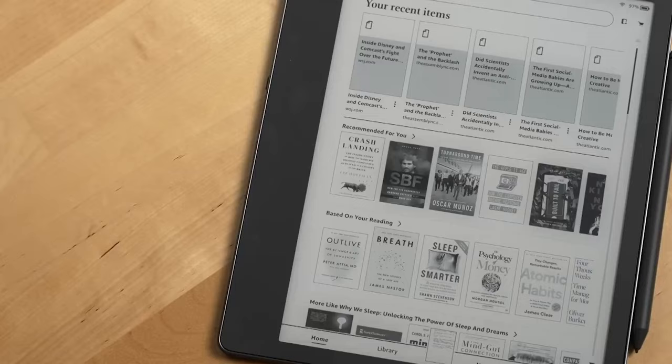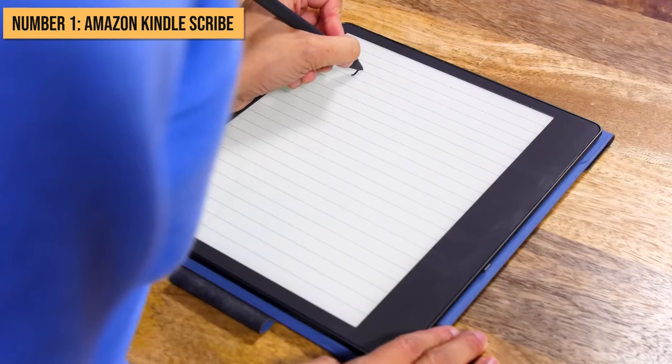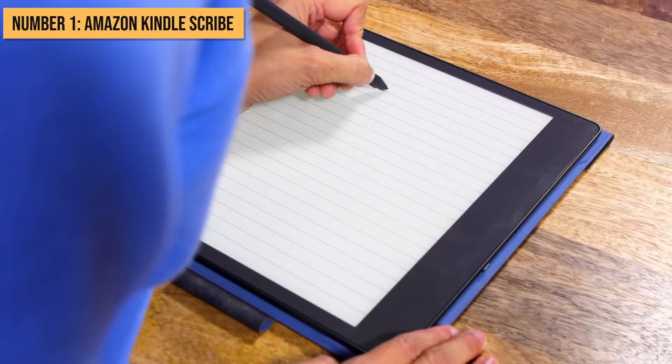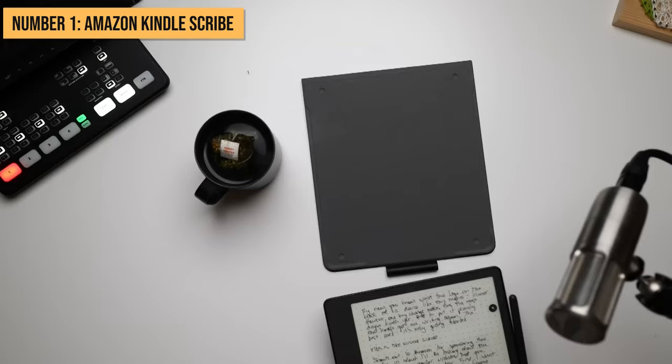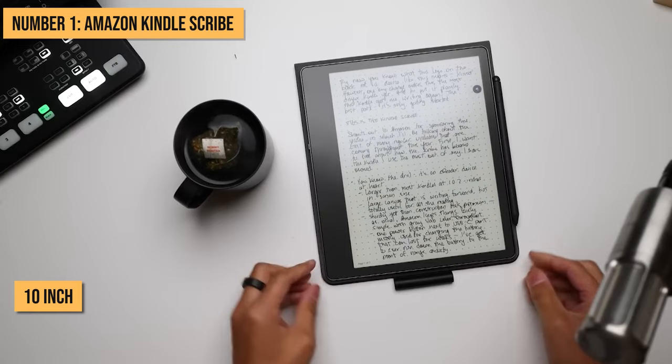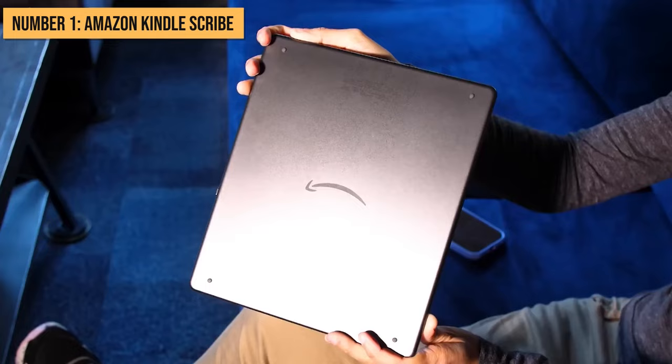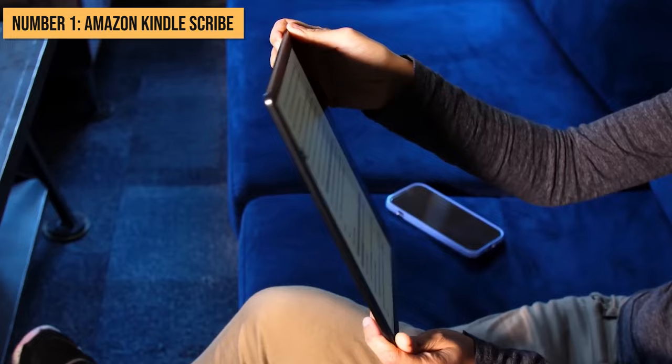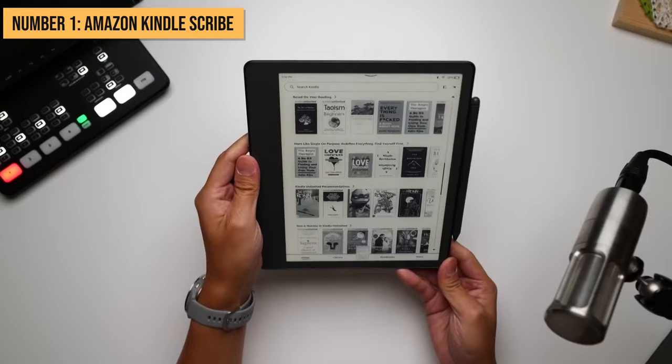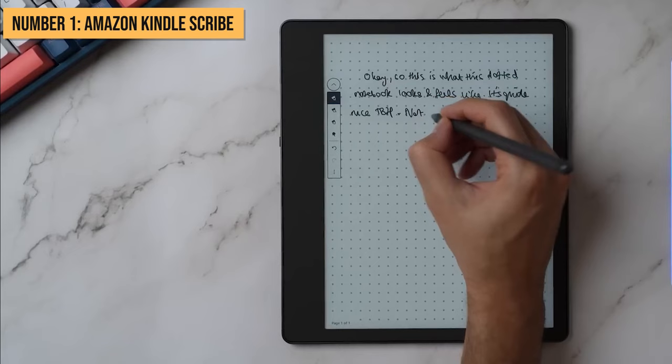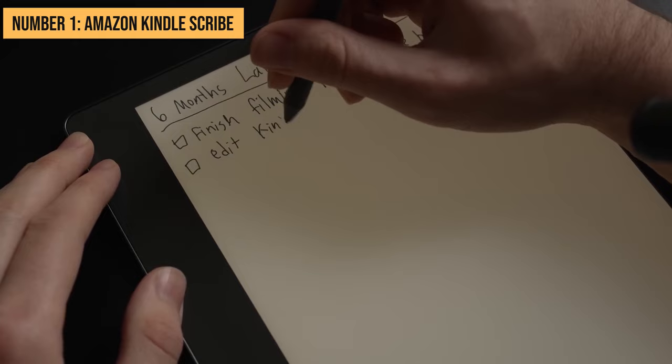Claiming our top spot for the best smart notebook in 2024 is the Amazon Kindle Scribe. This thing hits the sweet spot, combining the versatility of a paper notebook for freehand writing with robust e-reading in a gorgeous 10-inch package that's a joy to write and read on. Let's dive into the details on why the Kindle Scribe claims our Best Smart Notebook Award. It all begins with the stellar 300 pixel per inch glare-free display and included pen that work in perfect harmony for a wonderfully natural writing experience with paper-like friction. The pen never needs charging or pairing, just pick it up and write.